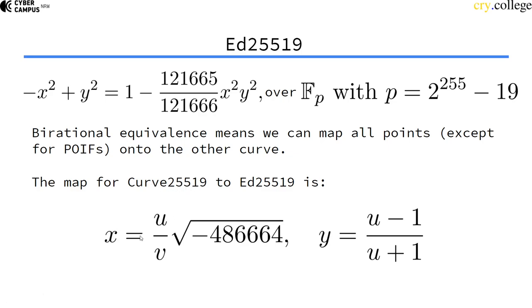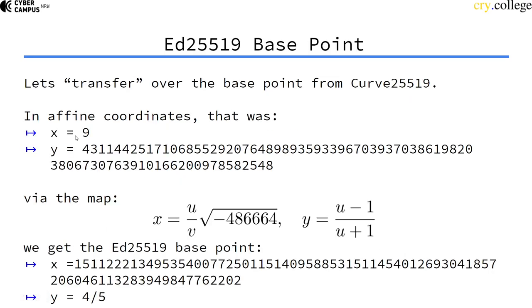So this is the map, and that way we can, for example, transfer our base point. The base point x equals 9. Now the y value is this. We have never actually used the y value because in curve 25519 we calculate with x z coordinates, but to transfer on this map we need the y value so we use it here.